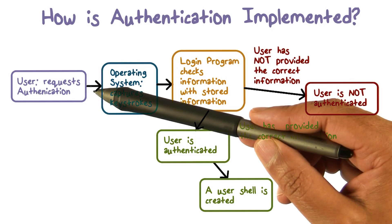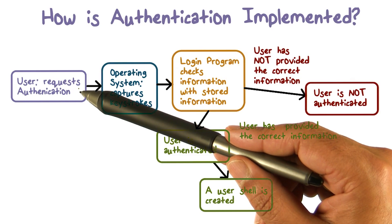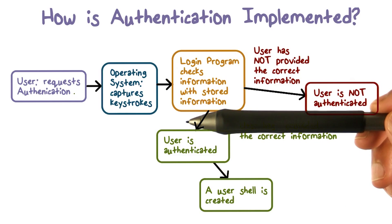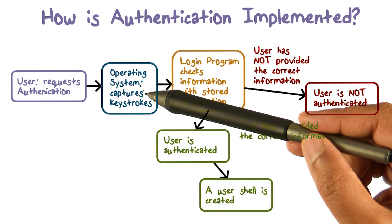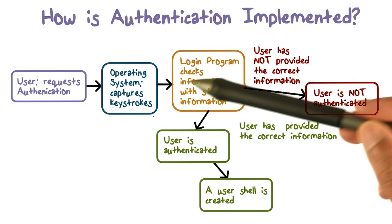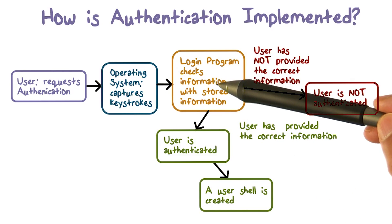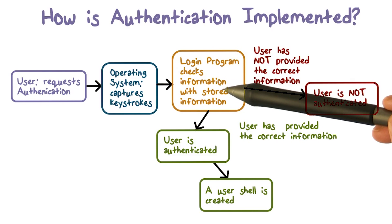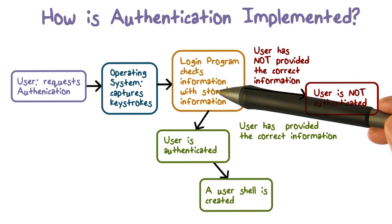The basic sequence of steps is that the user comes to the system and requests access to it, starting with a request for authentication — you first have to authenticate yourself. The operating system takes whatever claim about identity you make; for example, you may provide your login name. If you're providing a password, the operating system runs the login program, which checks that the password you provide is really your password — the one associated with this user.